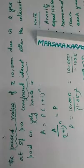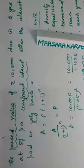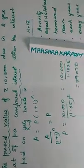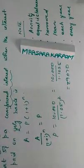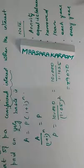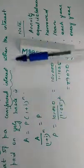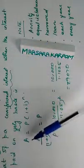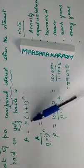The present value of ₹10,000 due in 2 years at 5% per annum compound interest when the interest is paid on a yearly basis. Present value is what we need to find. Using the compound interest formula: Amount = P × (1 + i)^n, we rearrange to find P. So P = Amount ÷ (1 + i)^n. We need to find P given that the amount is ₹10,000, i = 5%, n = 2.